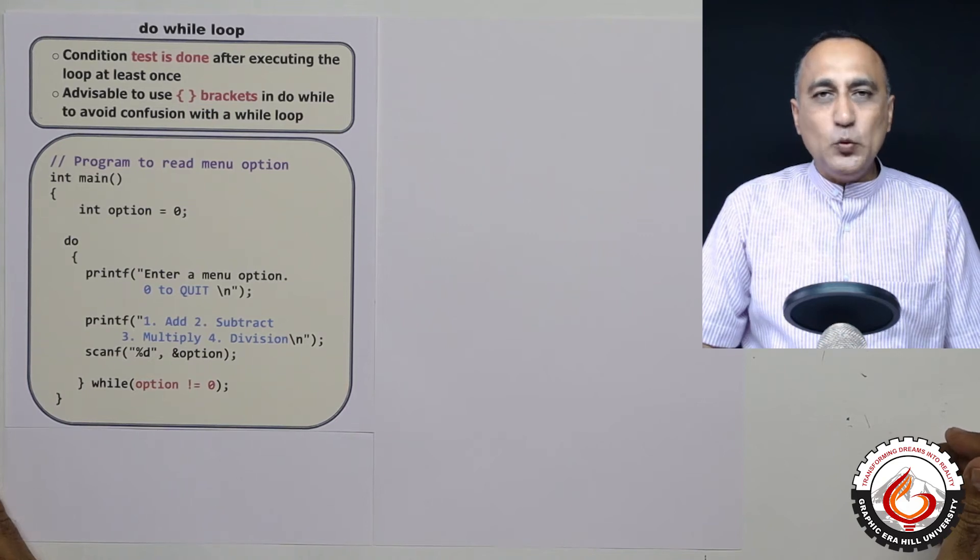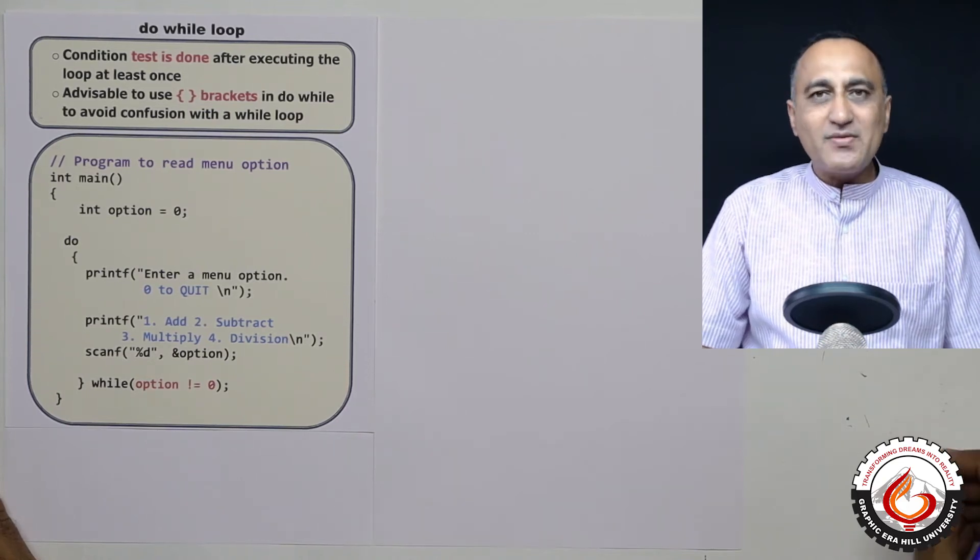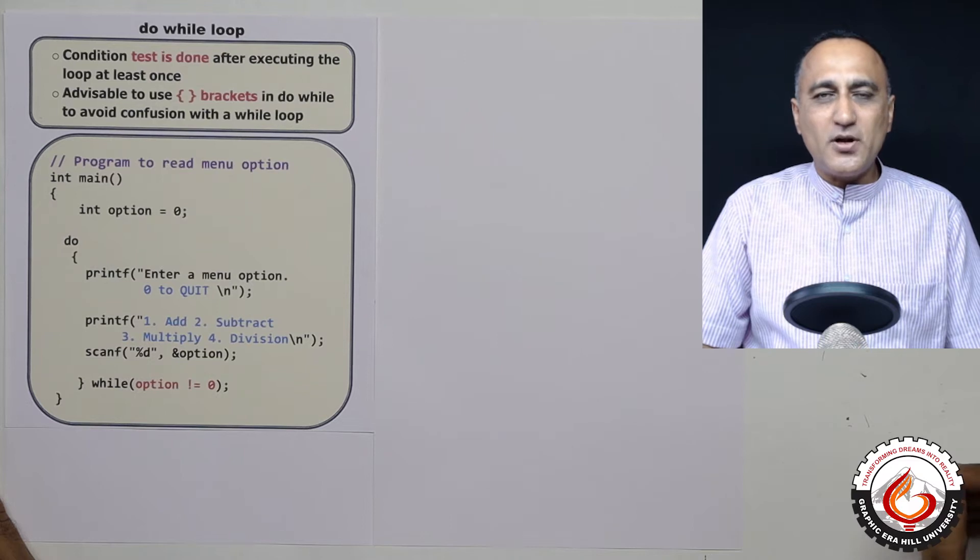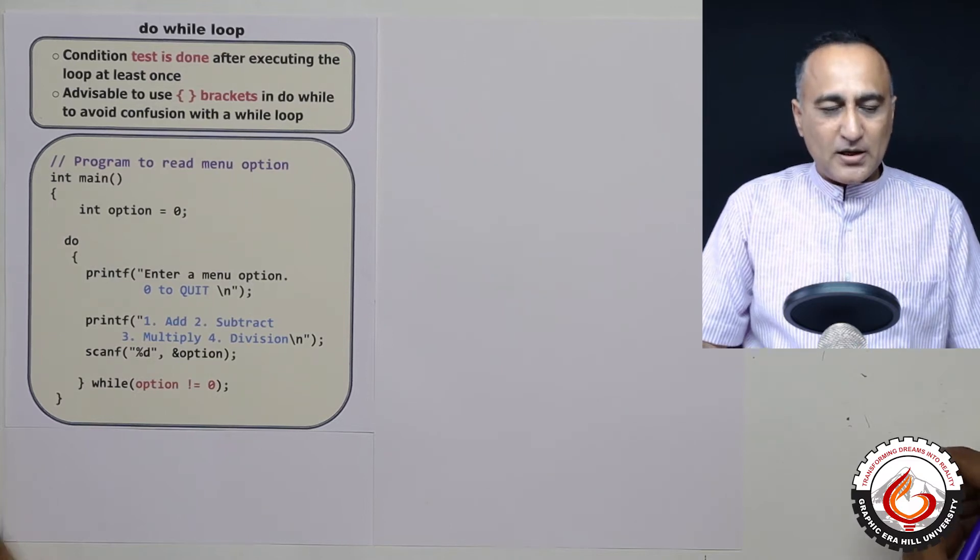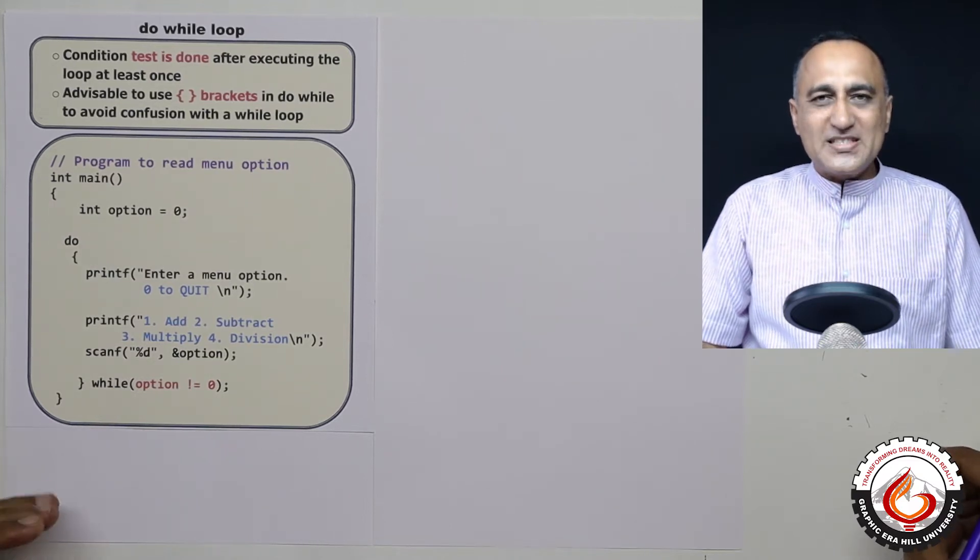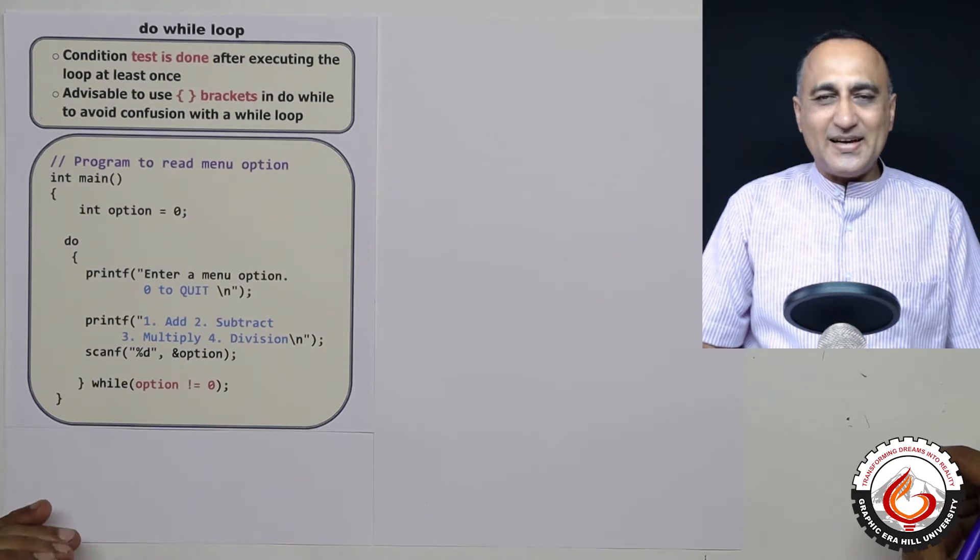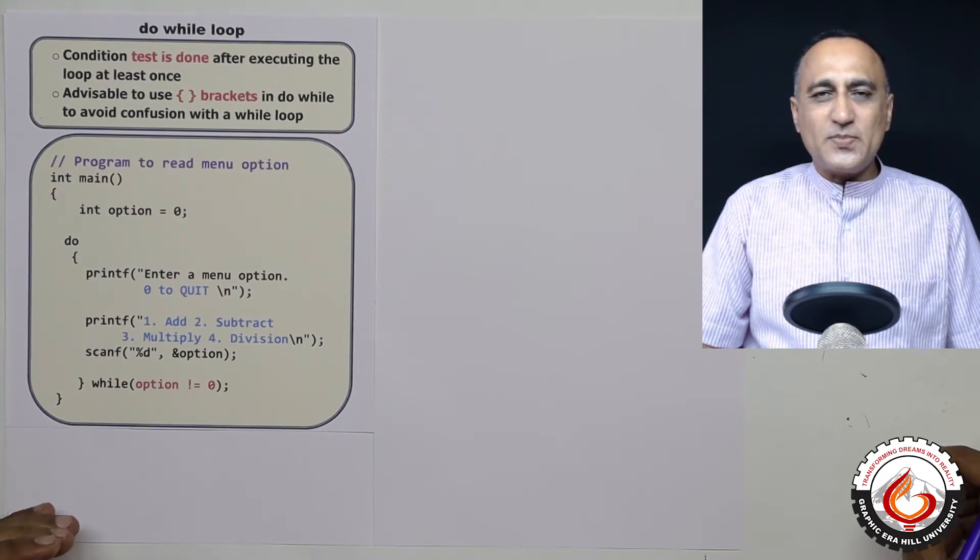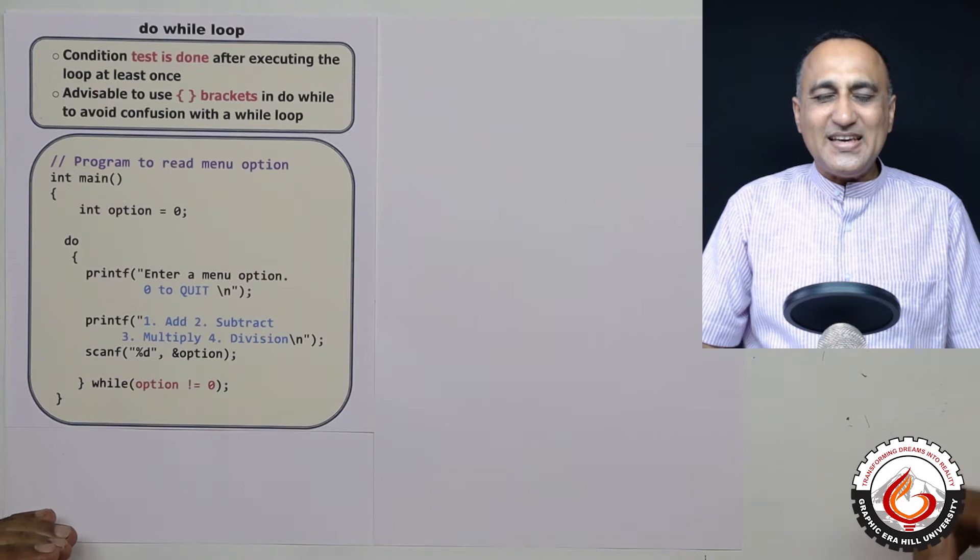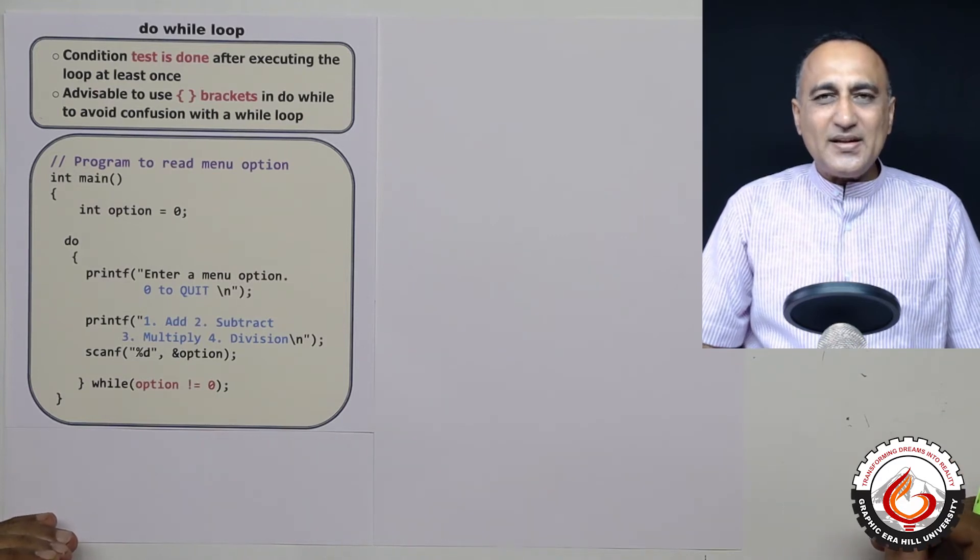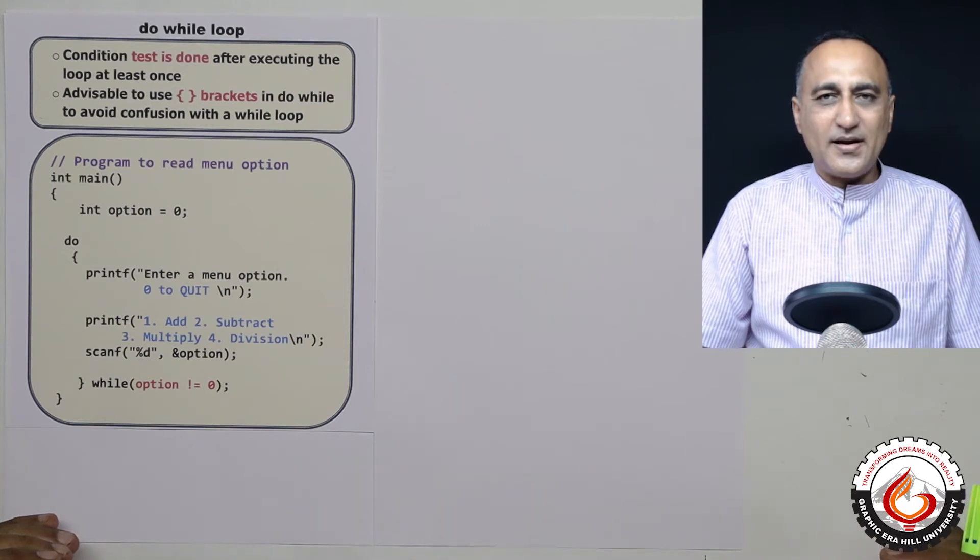Let's now talk about the do while loop. So far we have discussed the while and the for loop statements. The do while loop is different from the other two loops in the sense that the boolean expression or the test condition is done only when the body of the loop executes at least once.